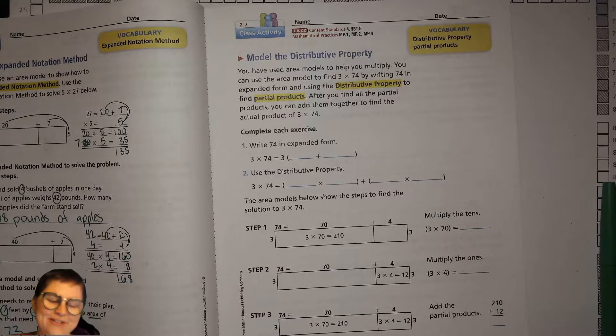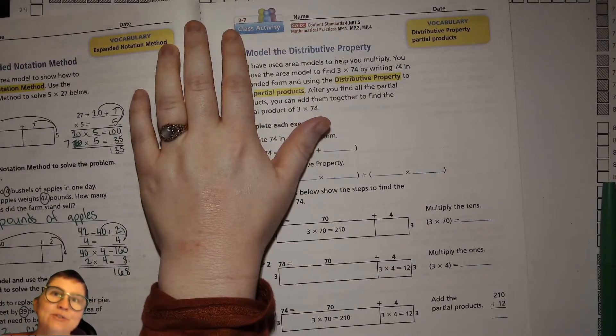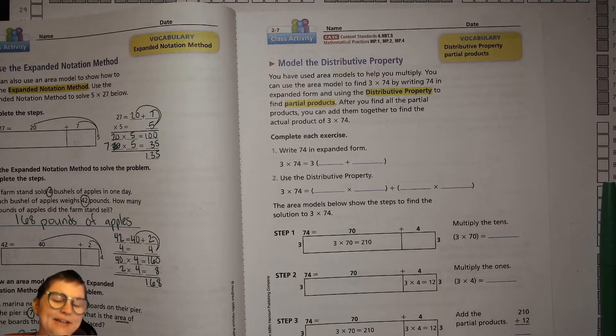Hey there fourth graders, this is Mrs. Smith here. Today we are doing unit 2 lesson 7, which is on page 59 of our books, and today we're talking about the distributive property.